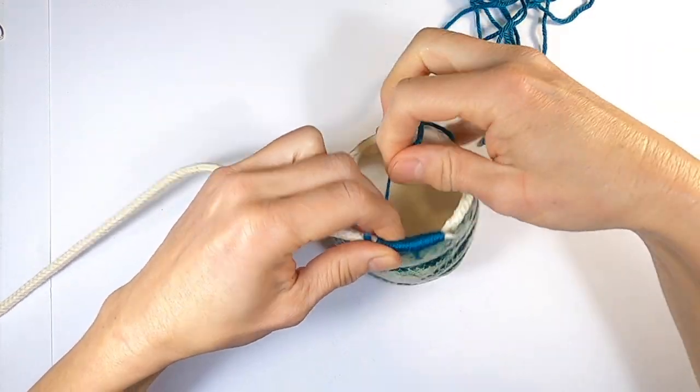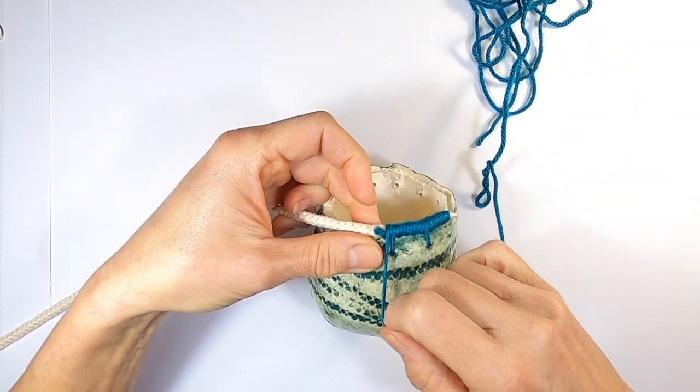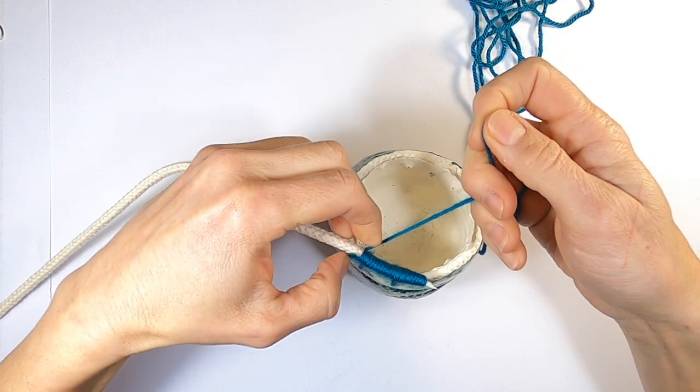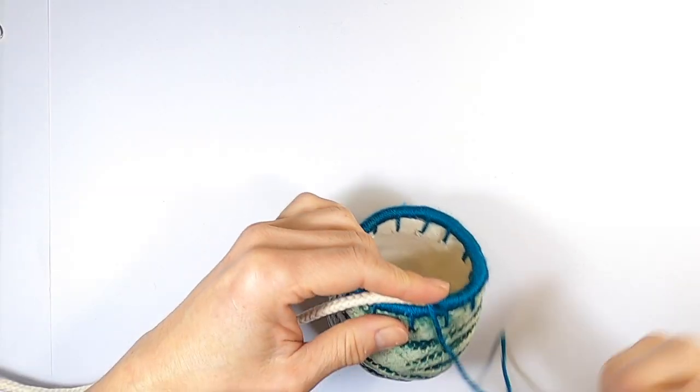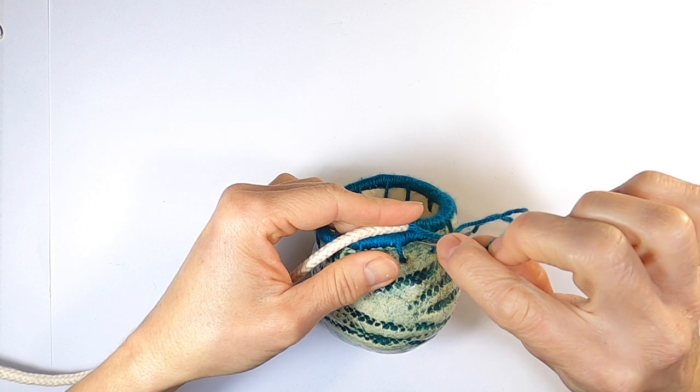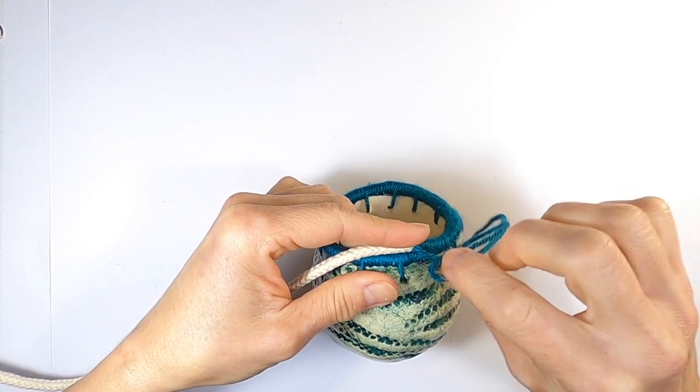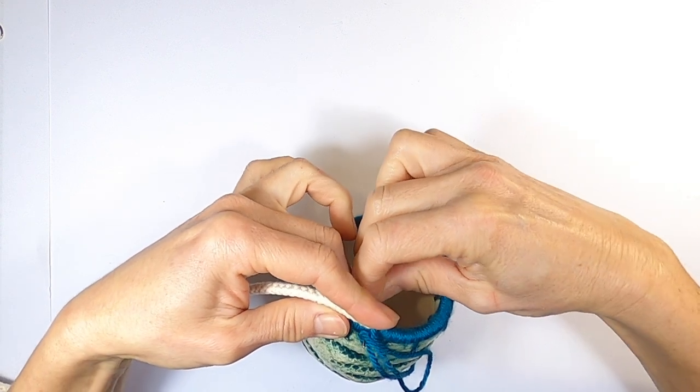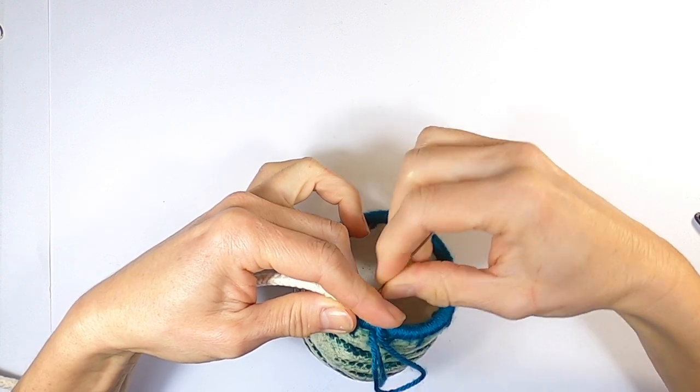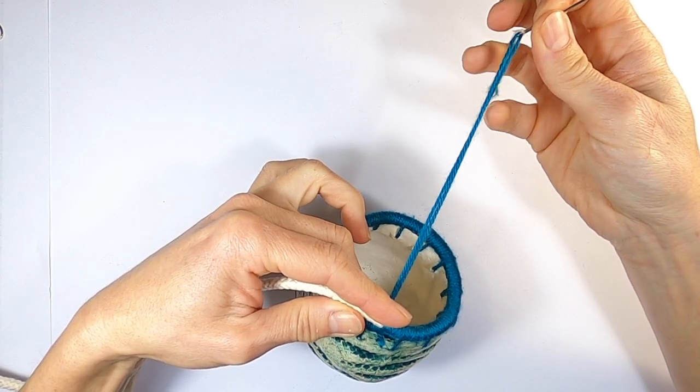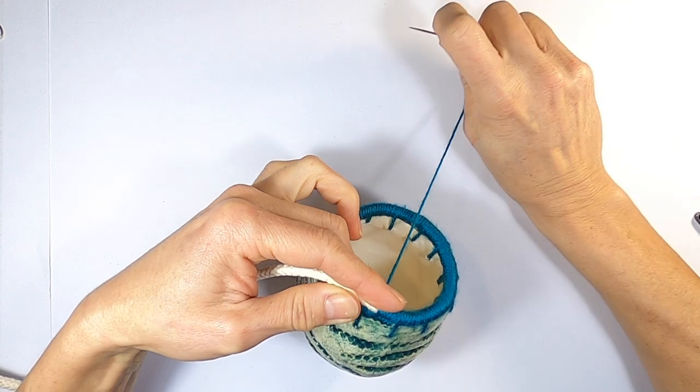Attaching the cord to the pot is probably the hardest part of this project, and it may even take a few goes to get it right. When you get around to the point you started, you can keep going in the same manner. But this time, instead of threading the wool through the pot hole, you thread it under the line of cord like this. This will connect the top cord to the cord underneath.